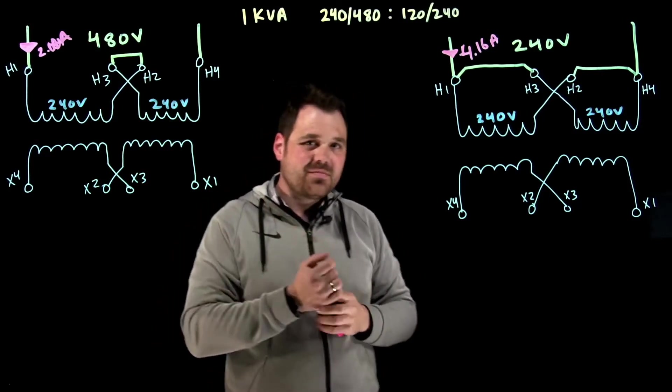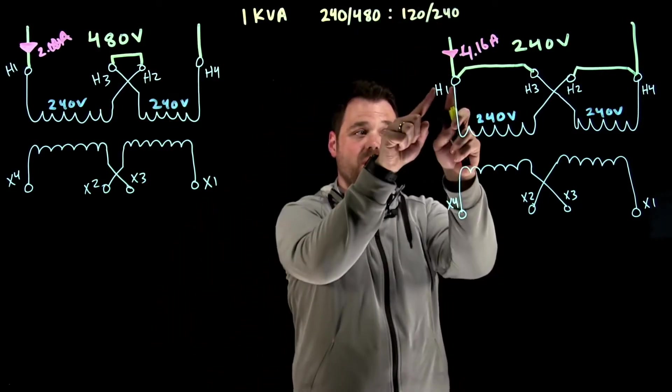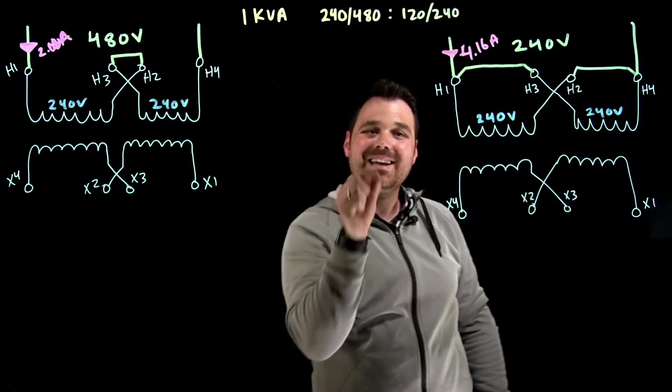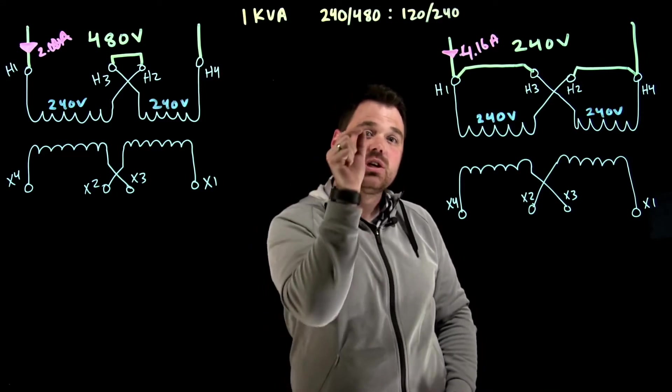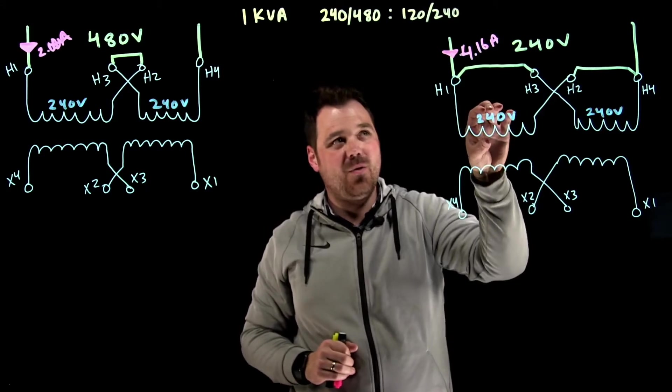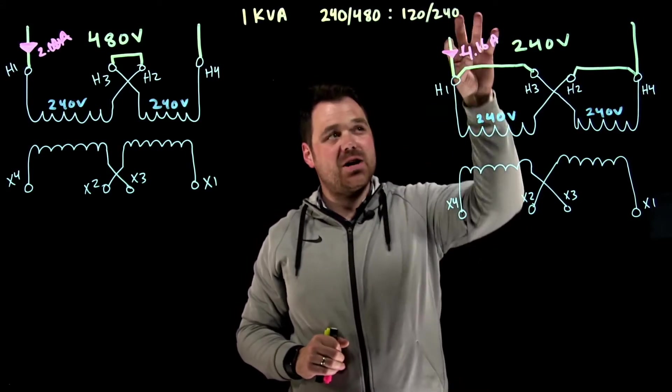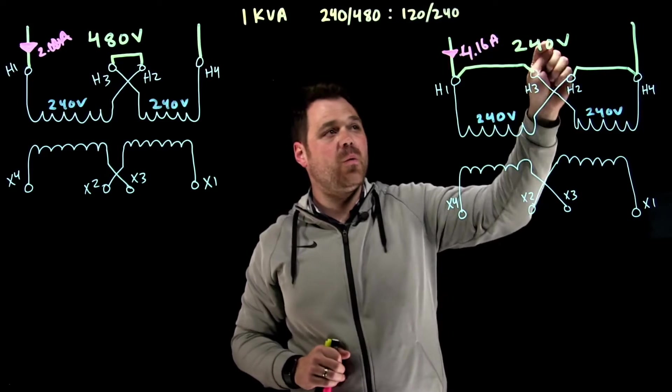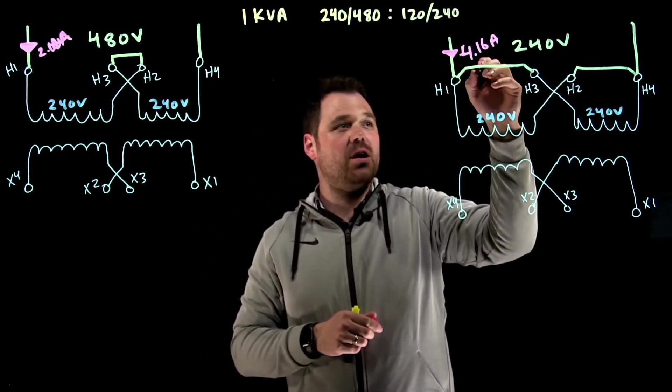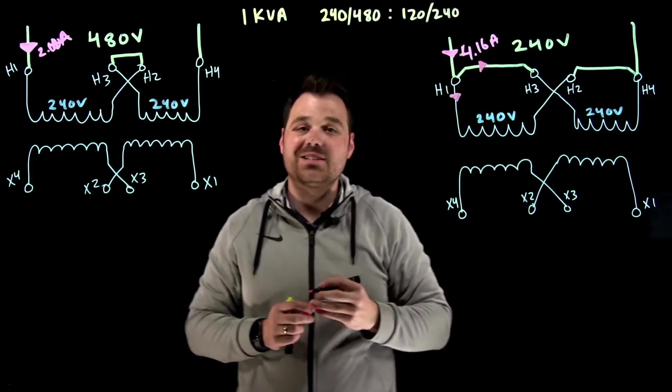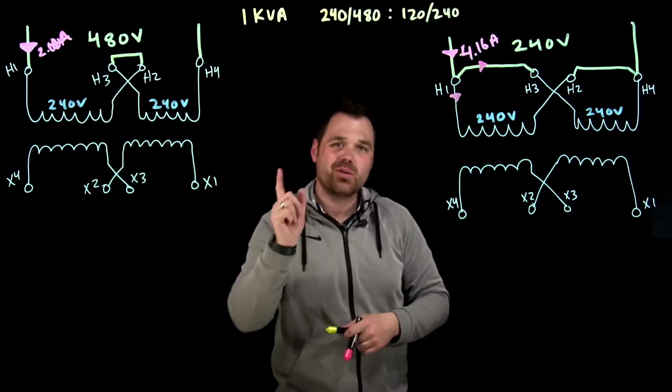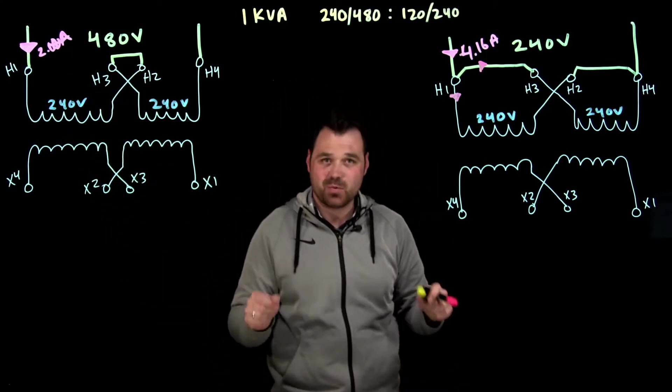keep in mind, as soon as it hits this point, H1, it's gonna split and I'm actually only gonna have 2.08 inside each terminal, or through each winding. So the winding is still only seeing 240, 2.08, but the actual whole transformer can do 4.16 amps at 240 volts. It's kind of interesting. You gotta remember, Kirchhoff's current law, that current is gonna split. So each winding is still seeing the same voltage and the same current rating. So that's what's cool about multi-winding transformers.